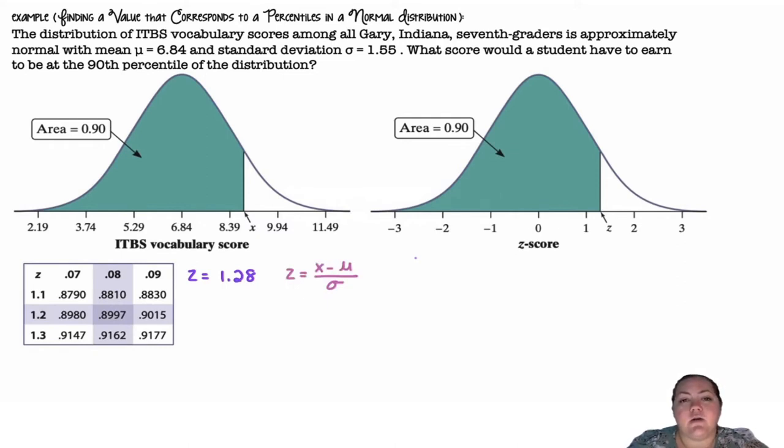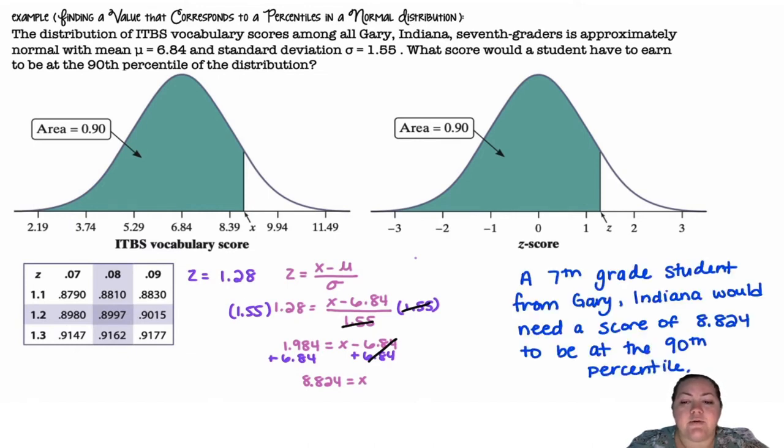So now that I know the Z score and I know the mean and the standard deviation, I'm going to solve for my unknown value, which is X. I'm going to use some algebra, multiply by 1.55 on both sides, add 6.84 on both sides, and we get 8.824 is equal to X. So a 7th grader from Gary, Indiana would need a score of 8.824 to be at the 90th percentile.